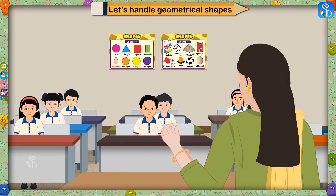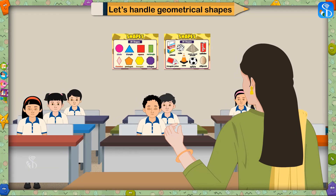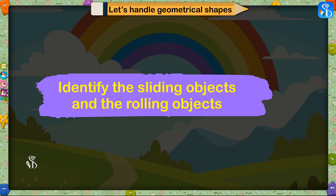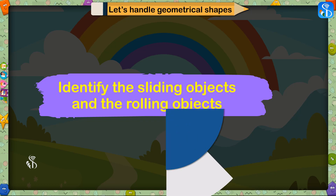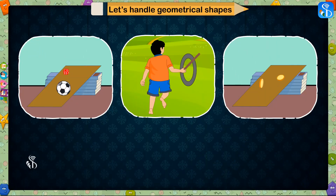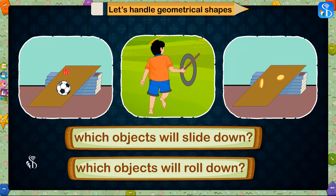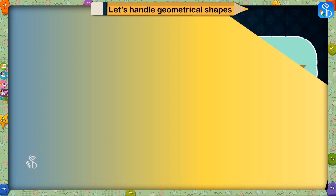All of you have guessed the answers correctly. Now identify the sliding objects and the rolling objects. Children, have a look at these pictures and we will try to find out which of the objects will slide down and which ones will roll down.